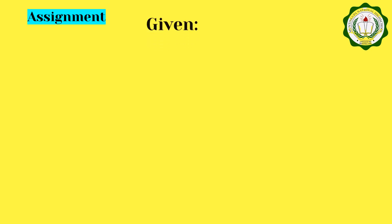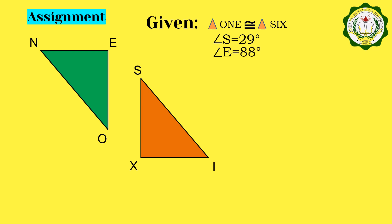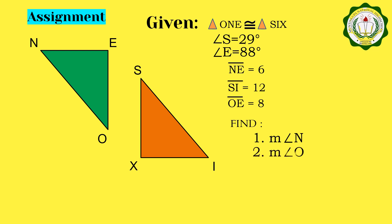For your assignment, you are given triangle ONE congruent to triangle SIX. Given: angle S is equal to 29 degrees, angle E is equal to 88 degrees, segment NE is equal to 6, segment SI is equal to 12, and segment OE is equal to 8. You are asked to find: number 1, measure of angle N; number 2, measure of angle O; number 3, measure of angle I; number 4, measure of angle X; number 5, measure of segment NO; number 6, segment SX; and number 7, measure of segment XI.